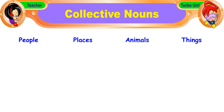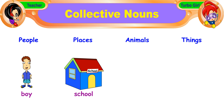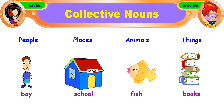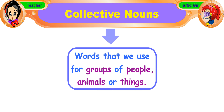Some examples are boy, school, fish and books. Am I right? Yes. Now, collective nouns are words that we use for groups of people, animals or things.